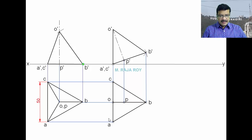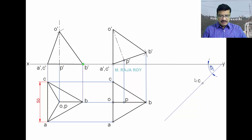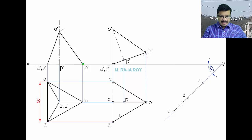Next, in the third stage, tilt the AC edge to 45 degrees. Draw a 45-degree line — this angle is 45 degrees. Pick a point C-dash somewhere on the line. After marking point C, measure C to A distance with compass and mark it here. Then measure C to O distance with compass and mark it here — this is O. Now OB is perpendicular to CA, so draw a perpendicular to line AC. On this line, mark point B. This top view is now reconstructed at an angle of 45 degrees.